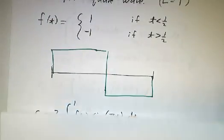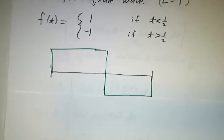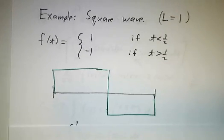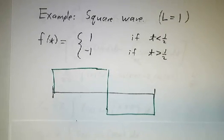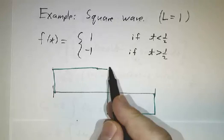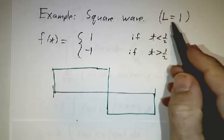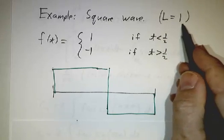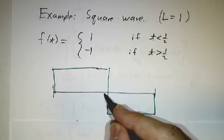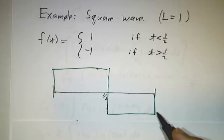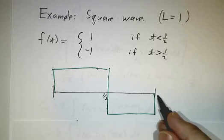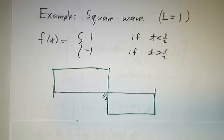Let's work an example. Our example is a square wave: the function which is 1 from 0 to L/2 and then −1 from L/2 to L. For simplicity, I'll take L = 1, so it's 1 from 0 to 1/2 and −1 from 1/2 to 1. We want to write that as a sum of sine waves.